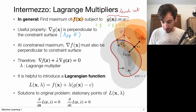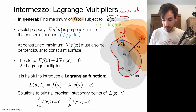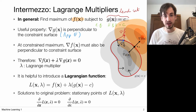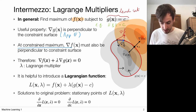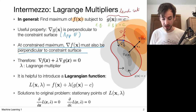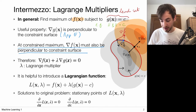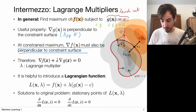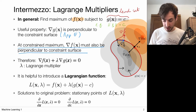As we keep moving along the level set, at some point there's no improvement left to make — then the gradient of f and the gradient of the constraint function are either parallel or anti-parallel. This tells us that at a constraint maximum, the gradient of f must also be perpendicular to the constraint surface. Otherwise we'd still have a gradient component along the level set that would allow us to update x further.